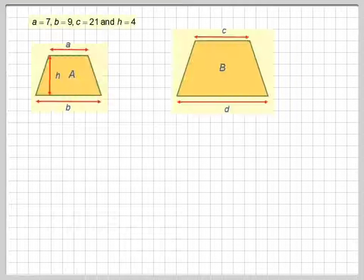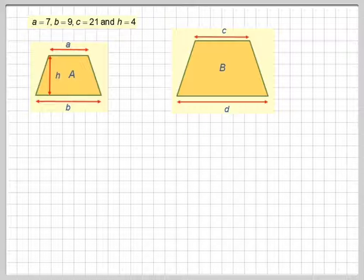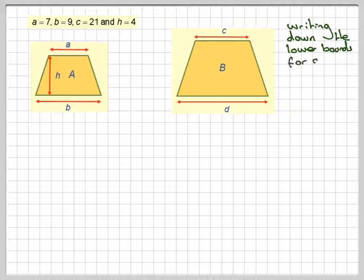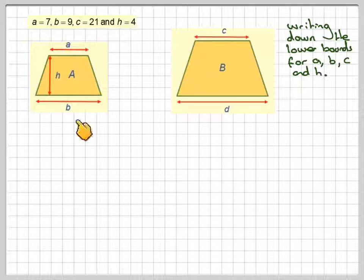Now we need to find the area of B, so we want to write down the lower bounds because we want the lowest area of B. So we write down the lower bounds of a, b, h, and c.